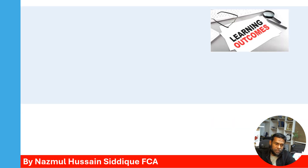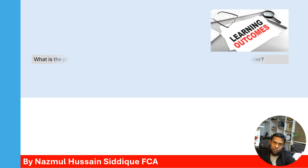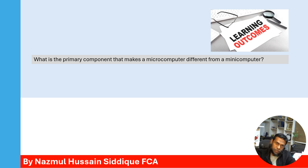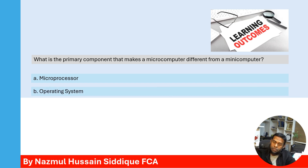Now we shall test our learning outcomes. Question: What is the primary component that makes a microcomputer different from a minicomputer? Option A: Microprocessor. Option B: Operating system.